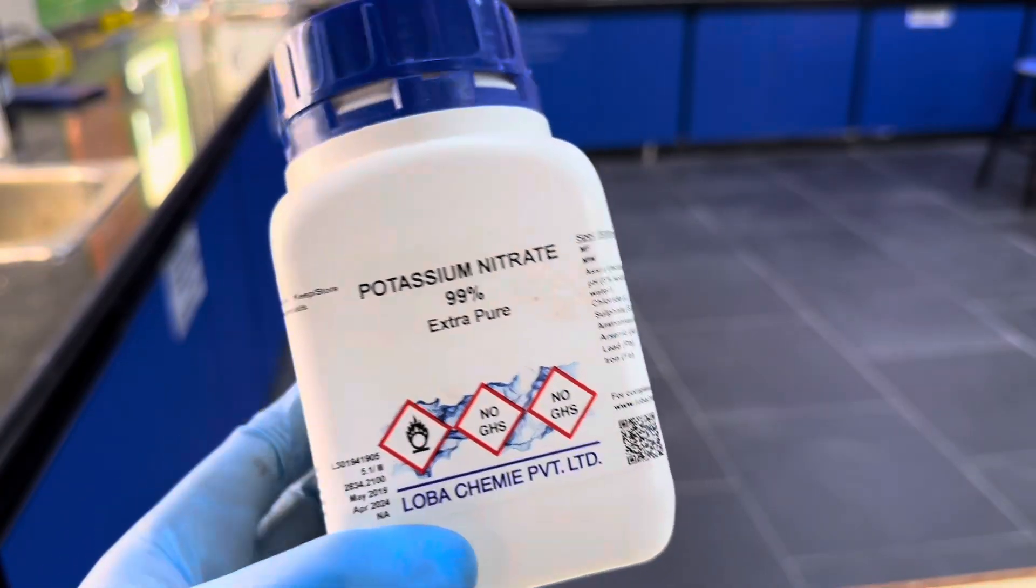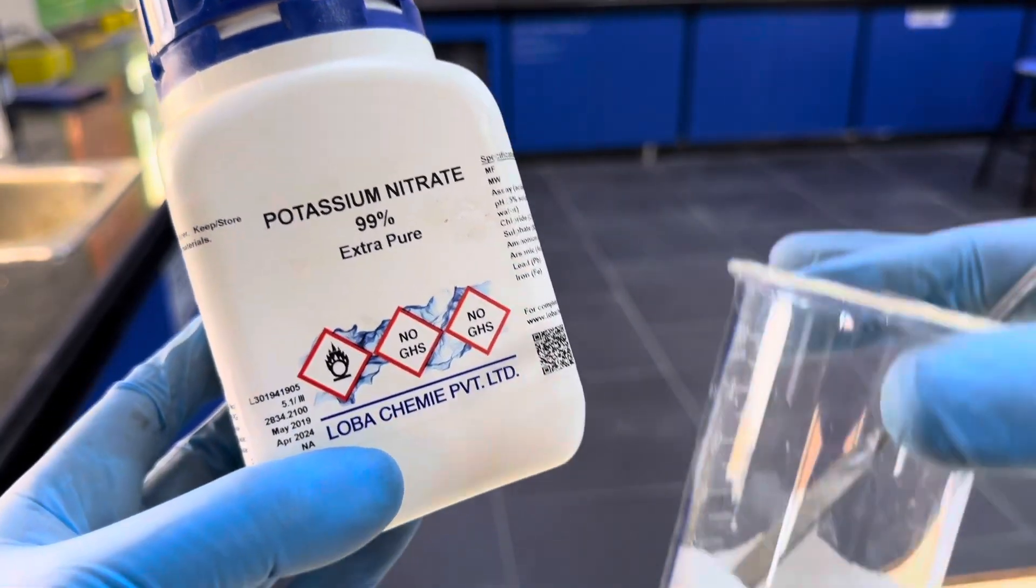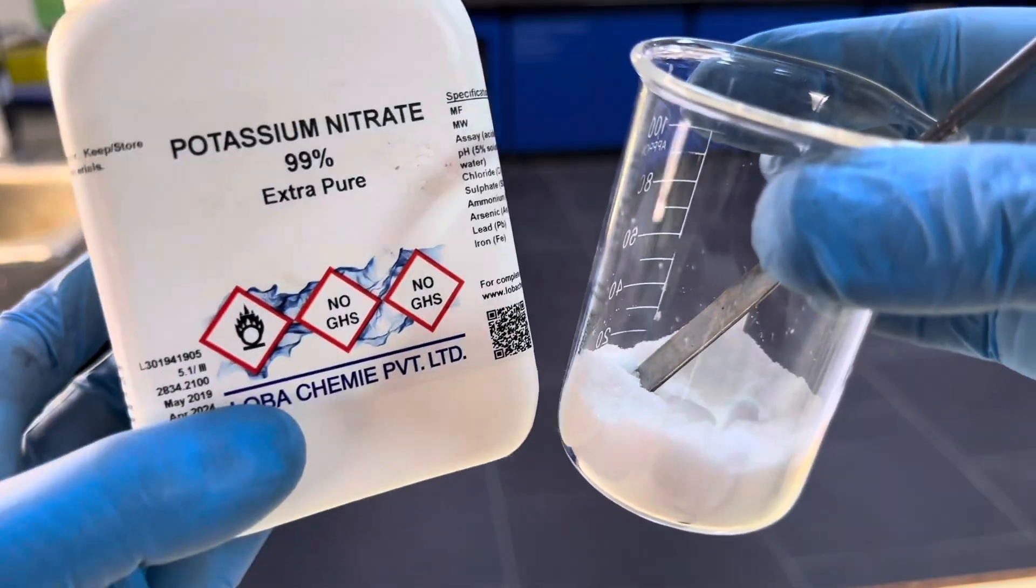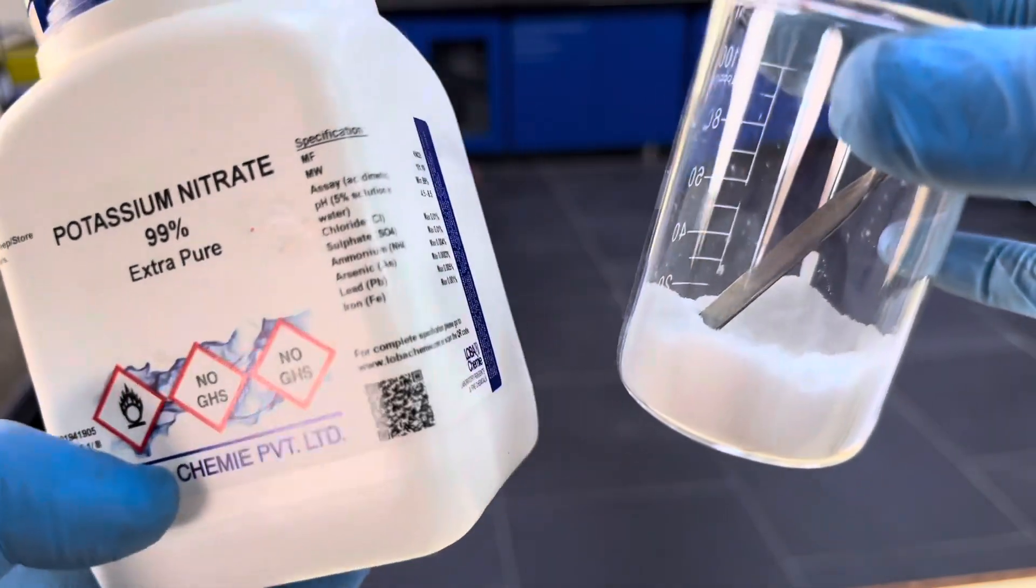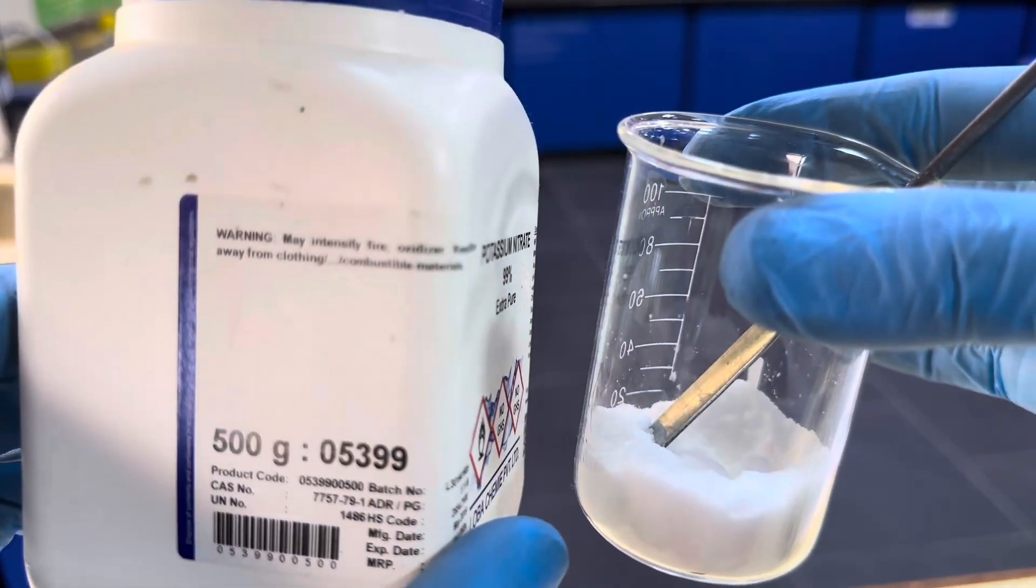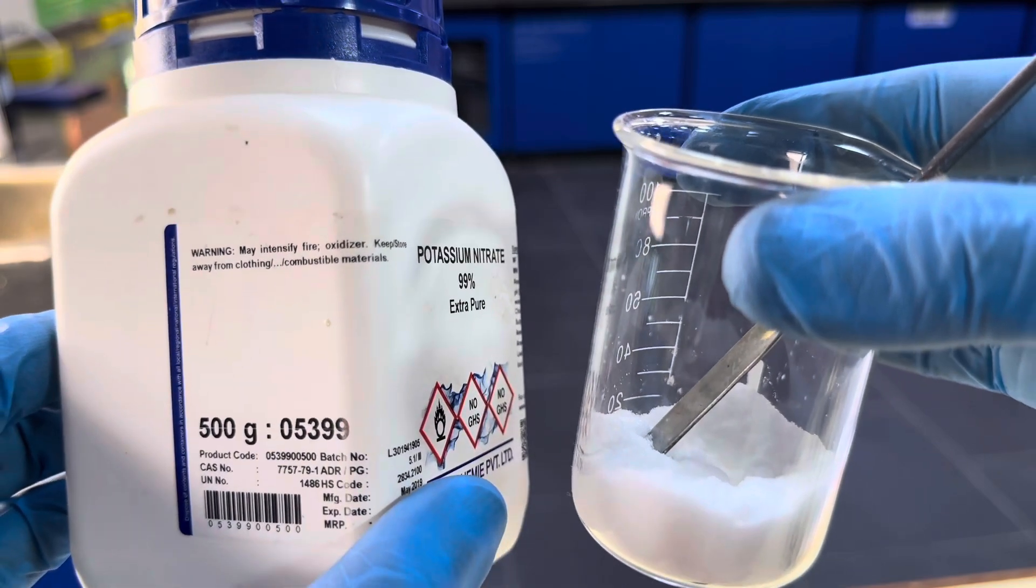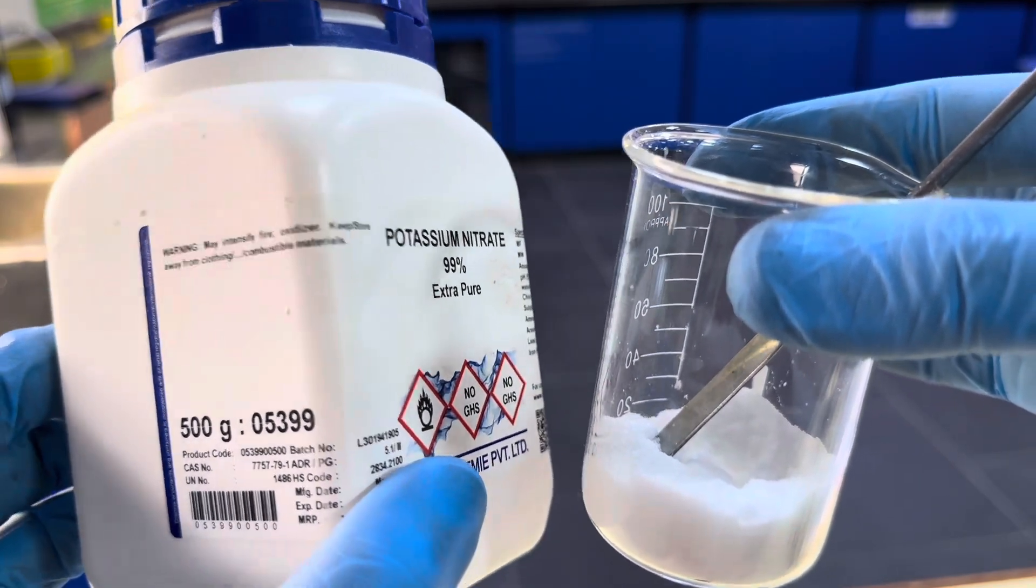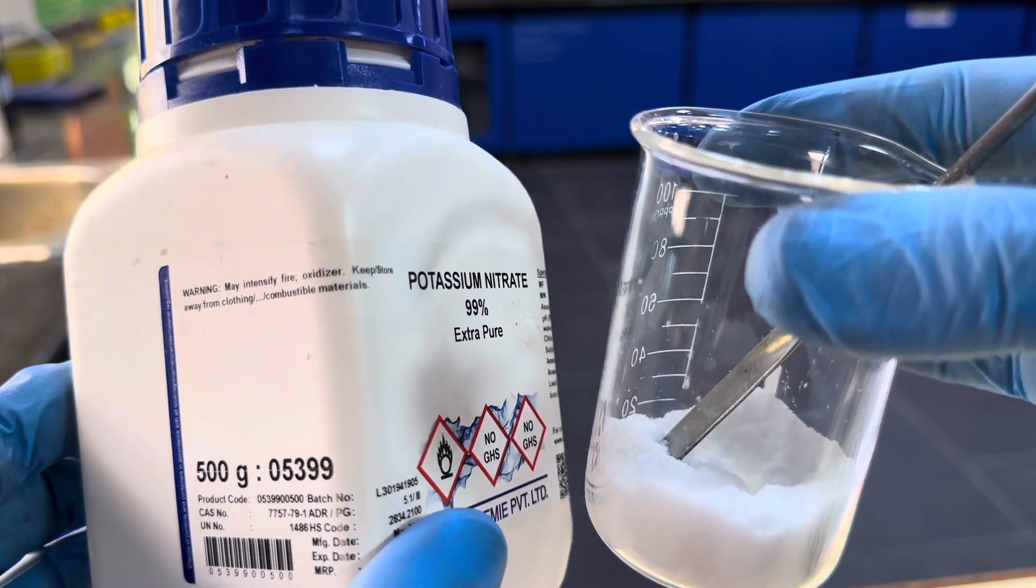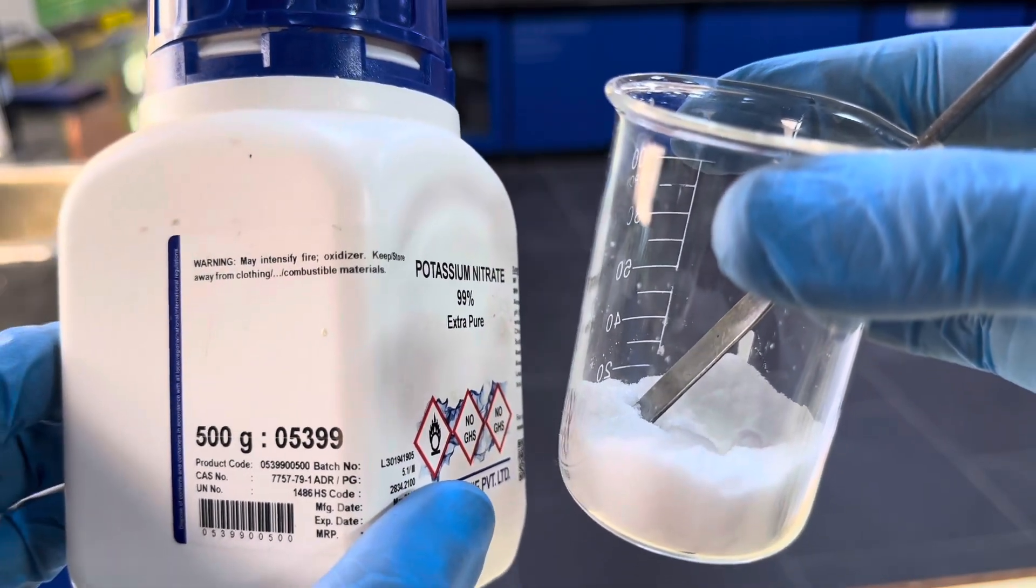This is the potassium nitrate and it appears as a white powder. It's an oxidizing agent so we have to store it in a place that's quite far away from where all of the other chemicals are. It may intensify fire, so you have to be careful and keep it away from clothing or any other combustible materials.